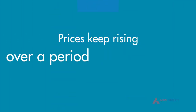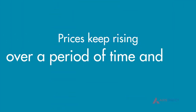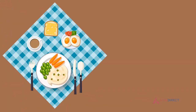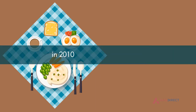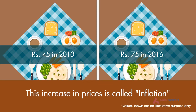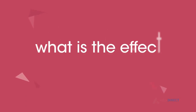Prices keep rising over a period of time and you pay more for the same. Let us understand this by seeing how your breakfast cost has changed over time. In 2010, a breakfast would have costed you rupees 45, but now the same would cost you rupees 75. Such an increase in prices is called inflation.